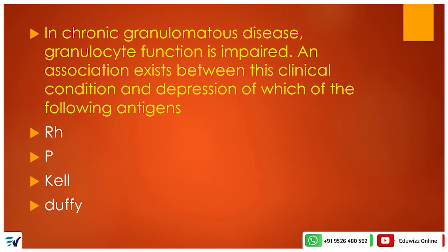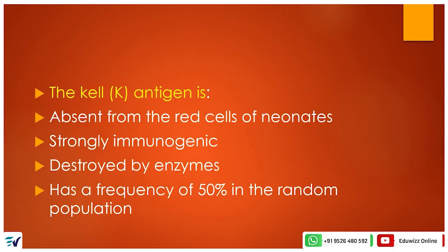The answer is Kell antigens. For the third question: The Kell antigen is absent from the red cells of neonates — false, it is present. Strongly immunogenic — yes, that is correct. Destroyed by enzymes — no, they are resistant. Frequency of 50% in the random population — no, it is more than 90%. The answer is that the Kell antigen system is strongly immunogenic.